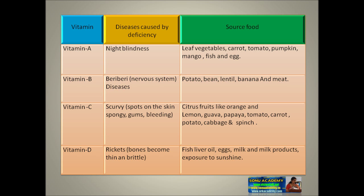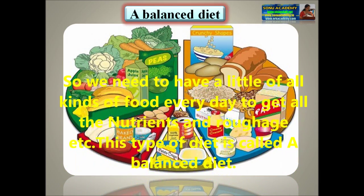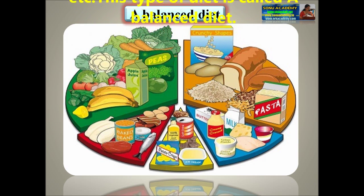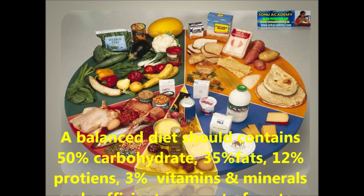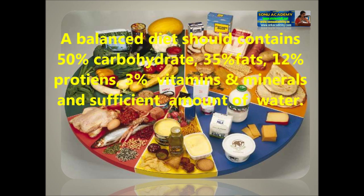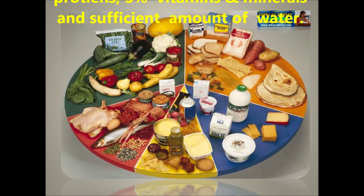These are some of the food sources rich in vitamins A, B, C, and D. We need to have a little of all kinds of food every day to get all the required nutrients and roughage. This type of diet is called a balanced diet. Every day, a balanced diet should contain 50% carbohydrates, 35% fats, 12% proteins, 3% vitamins and minerals, and a sufficient amount of water.